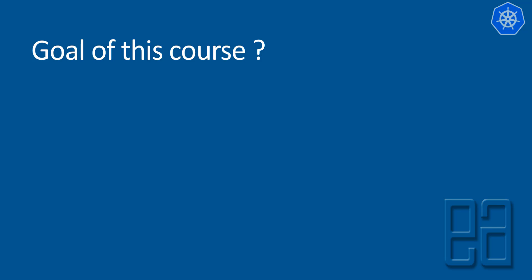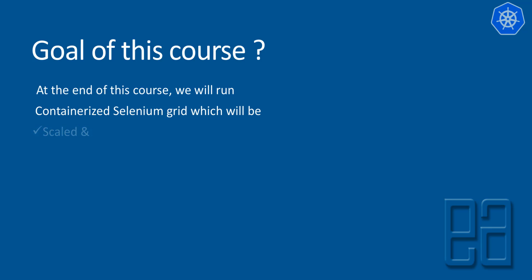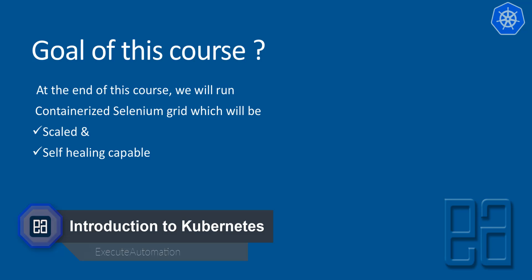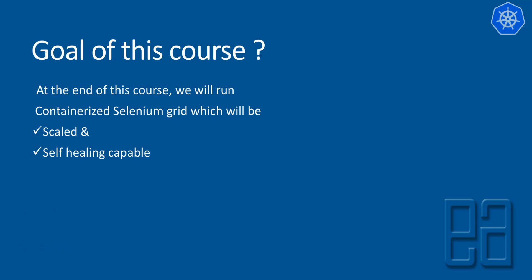What is the goal of this course? At the end of the course, we will run a containerized Selenium Grid which will be scaled as well as self-healing capable. In our previous Docker courses we saw how to scale test execution with Selenium Grid using Docker. This time it's not just scaling alone but also self-healing, and we'll see how to leverage the Kubernetes dashboard to see where and how tests are executing, including complete logging capabilities.